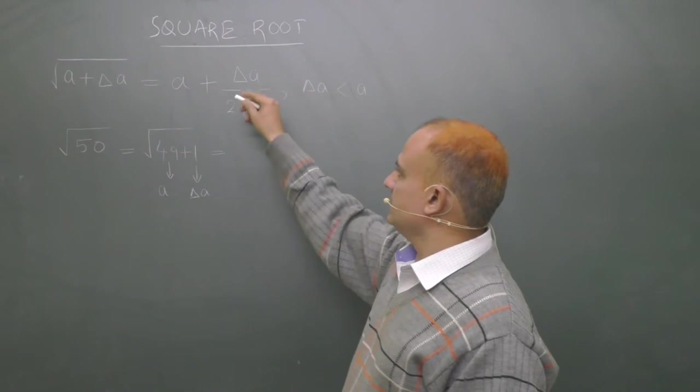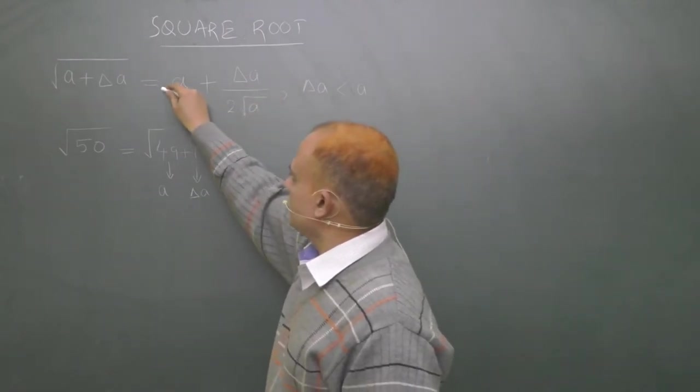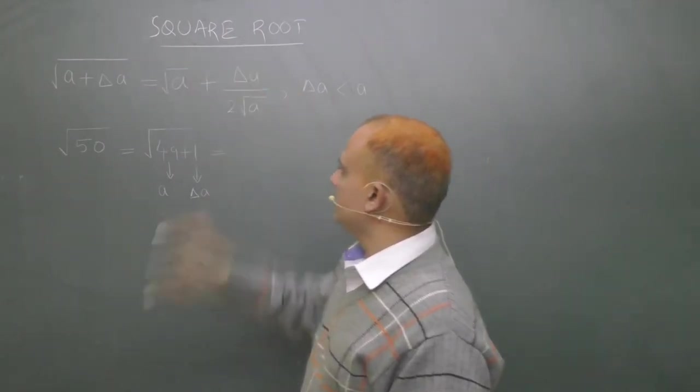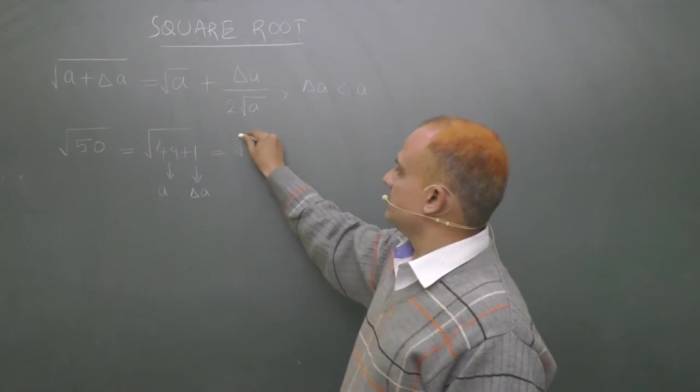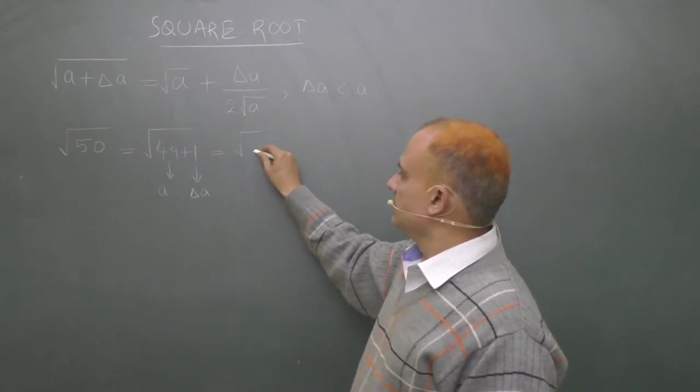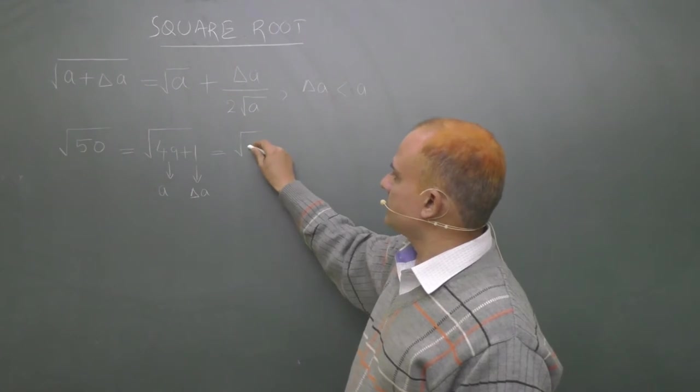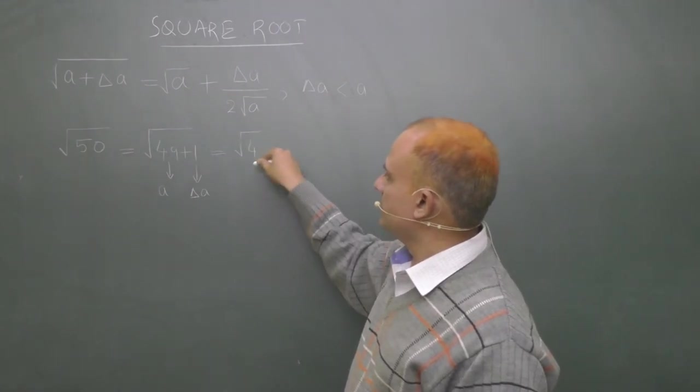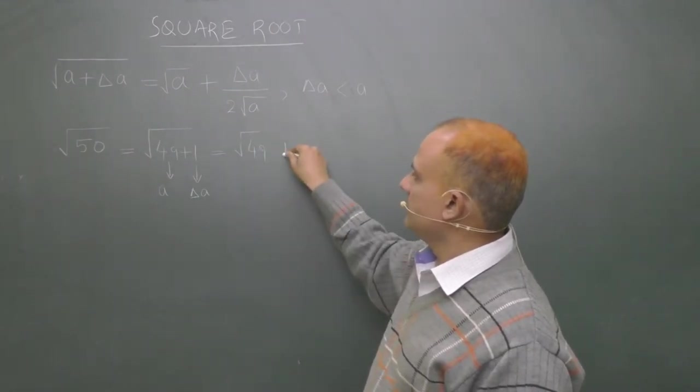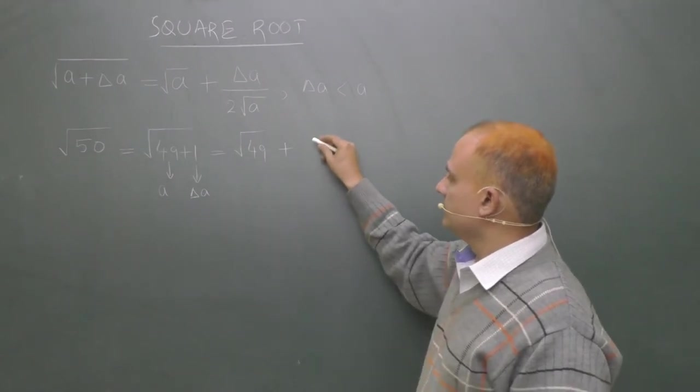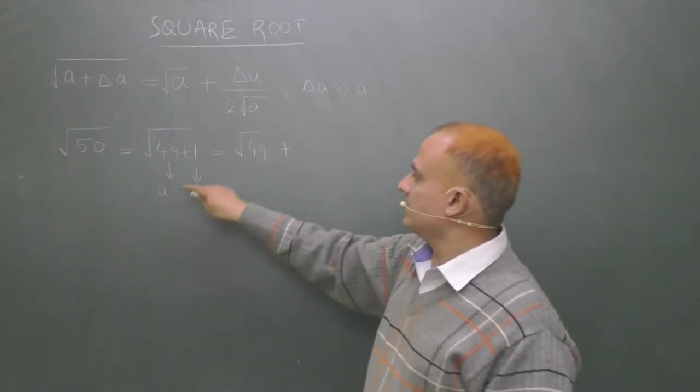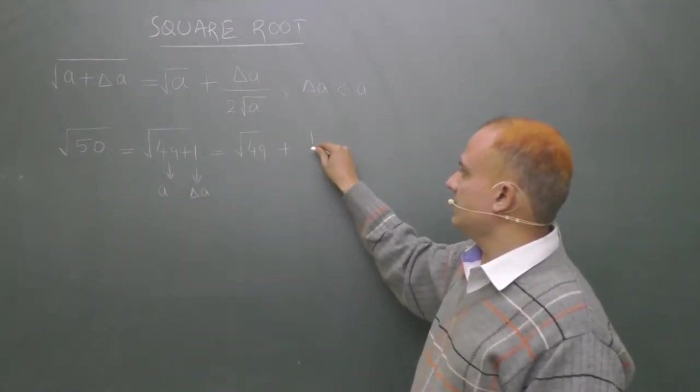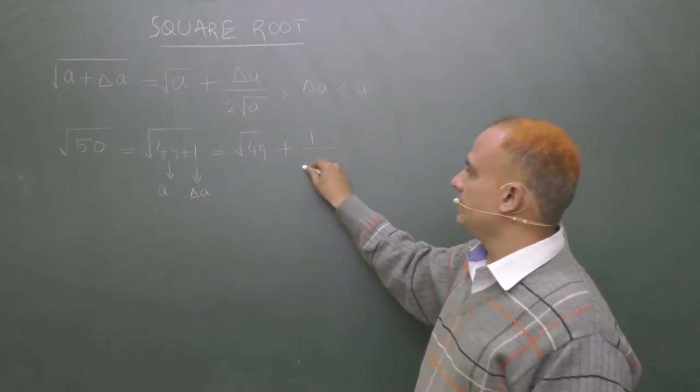Now the result says - sorry, one square root should be there. So result says square root of a. So instead of square root of a you write 49 plus delta a. Delta a, you can see, delta a is 1 upon 2 into...